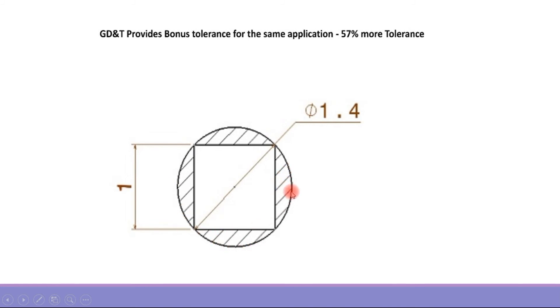So in the GD&T drawing, the hole will have extra tolerance, that is around 57% more tolerance available for it compared to the coordinate tolerancing method. So this is a bonus tolerance and it allows for cost reduction in manufacturing and also allows for easy assembly of the mating parts.